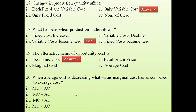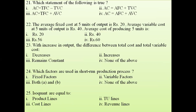Question 20: when average cost is decreasing, what is the status of marginal cost compared to average cost? The trick: think of the relationship between average product and marginal product — the exact reverse applies to average cost and marginal cost. So when AC is decreasing, marginal cost is less than or equal to average cost.